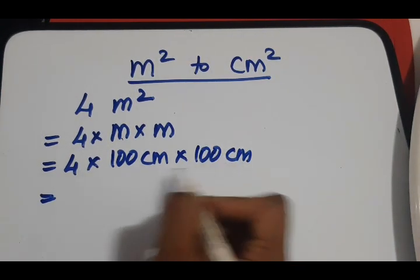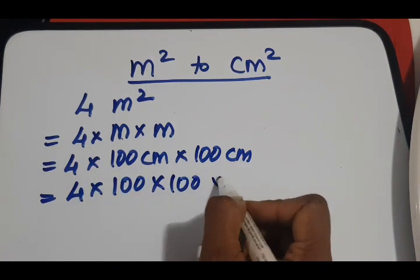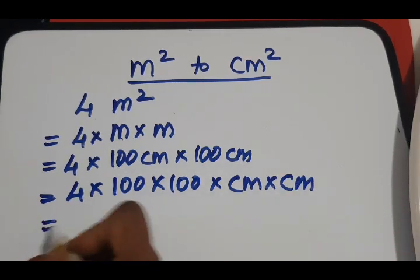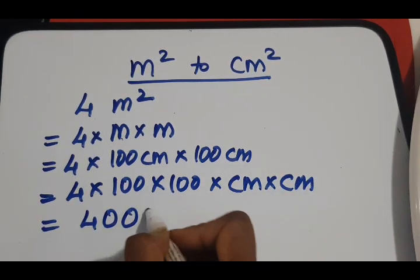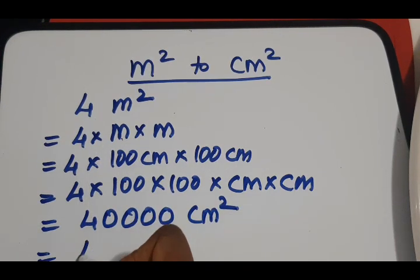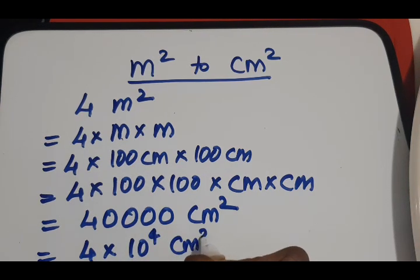Now collecting all the numbers together we have 4 times 100 times 100 times centimeters times centimeters, which gives us 40,000 centimeter square, or 4 times 10 to the power 4 centimeter square. That's the conversion.